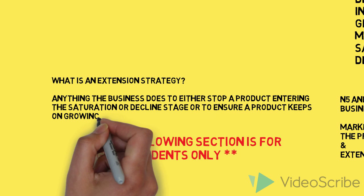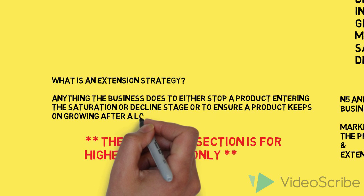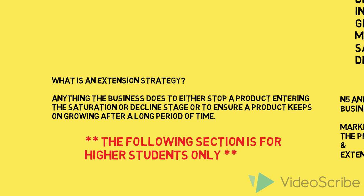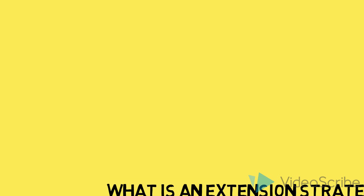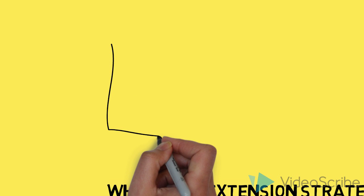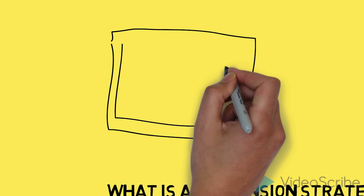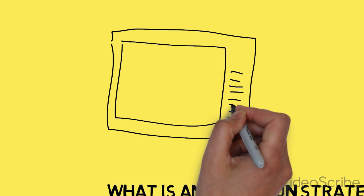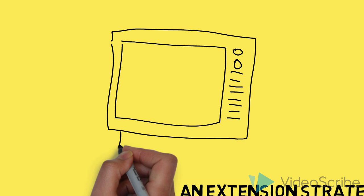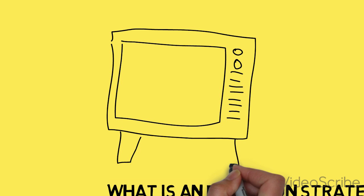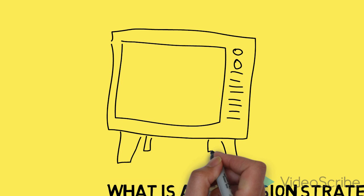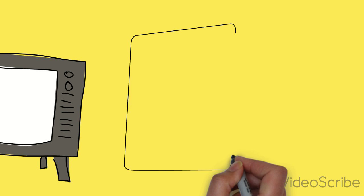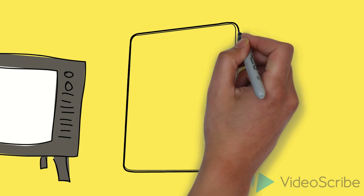Companies such as Coca-Cola, for example, seem to continually grow and do not enter the Decline stage. Many popular examples include the use of advertising as an extension strategy — more advertising will attract more customers and generate more sales.